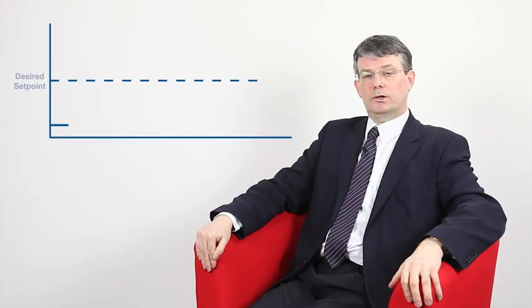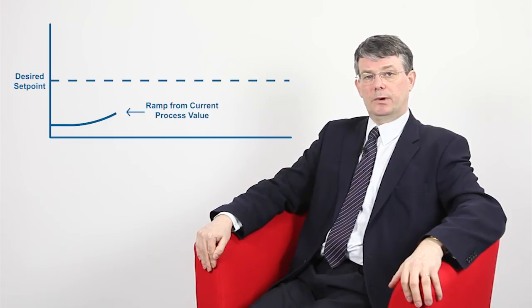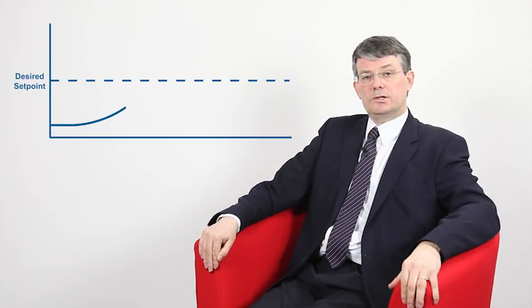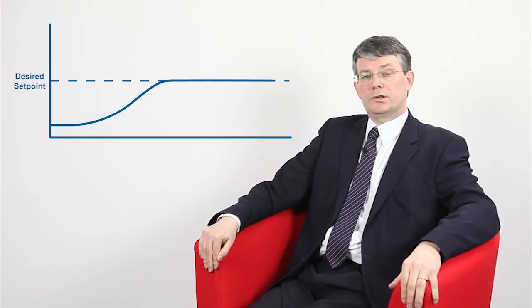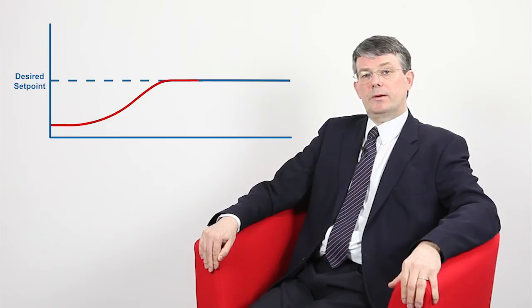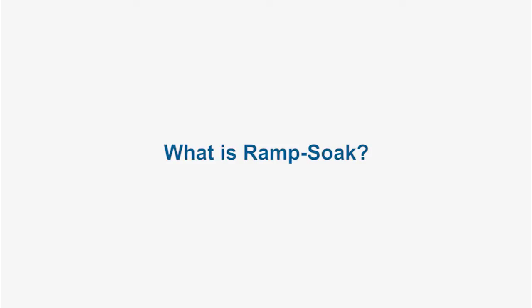To further protect the process, the ramp is also used at power up and when the controller is switched back from automatic to manual control. Under these circumstances, the process value is measured and used as the starting set point value, and from there the process is ramped up towards its final set point value at the rate set.